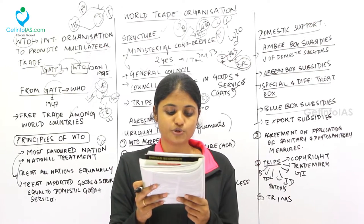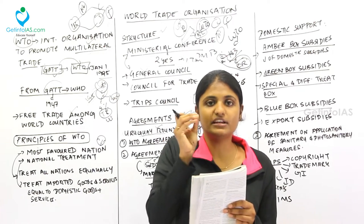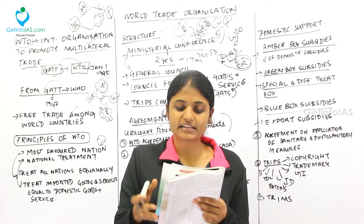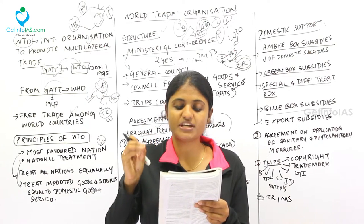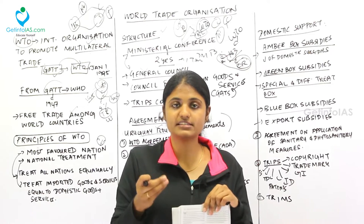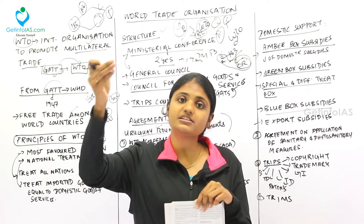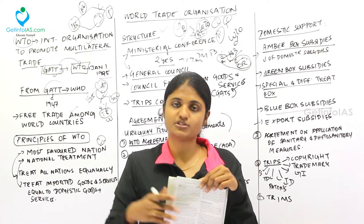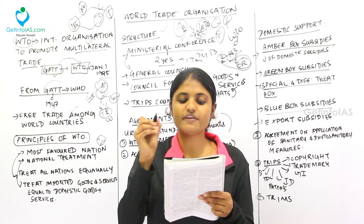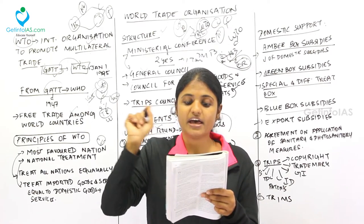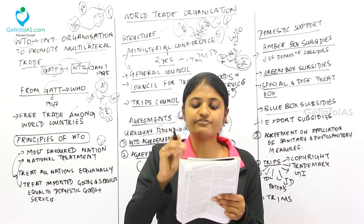The main components of the Agreement on Agriculture are: Market Access, Domestic Support or domestic subsidies, and Export Subsidies. Market access provisions call for providing access to imported agricultural goods in member countries. For example, if a country is producing wheat, it needs the other country's market to be open — that is called market access.